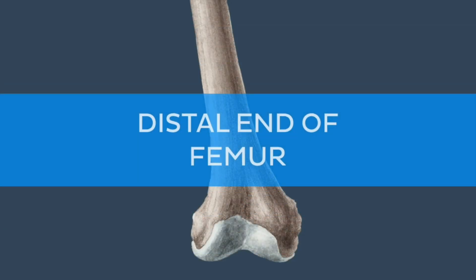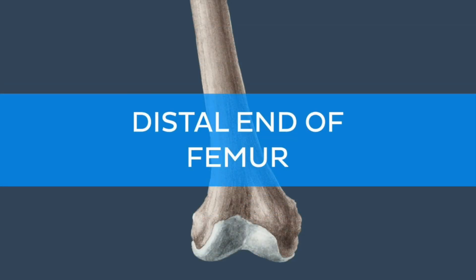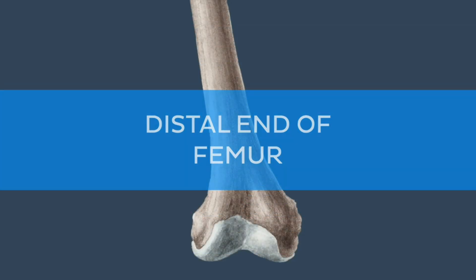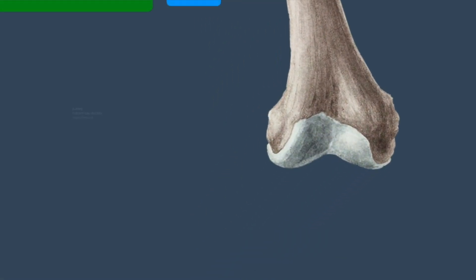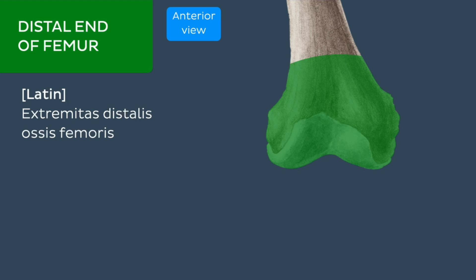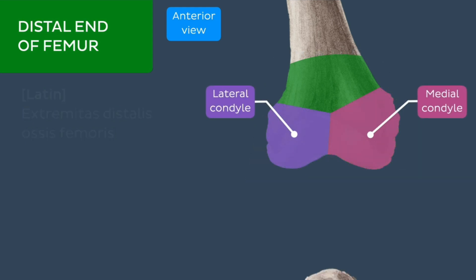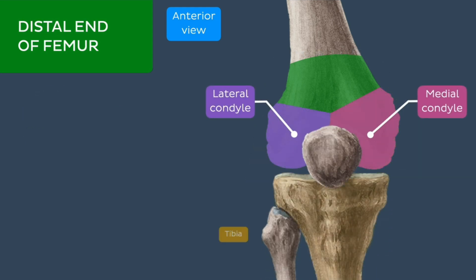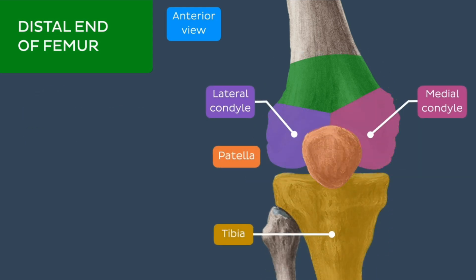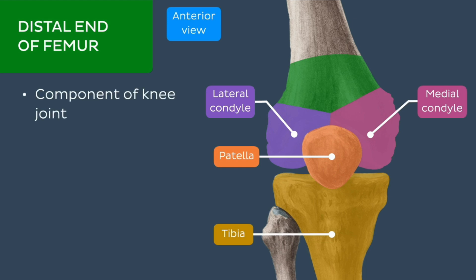The final part of the femur is its distal end. The distal end of the femur extends from the body and expands to form a trapezoidal shape. It is characterized by the medial and lateral condyles, which articulate with the tibia and patella to form the knee joint.